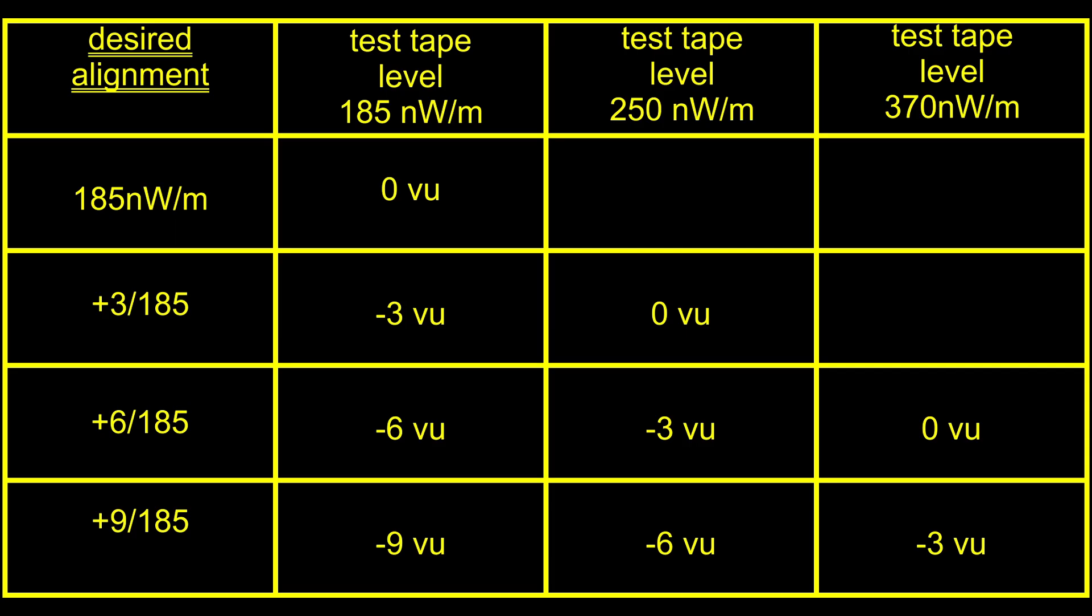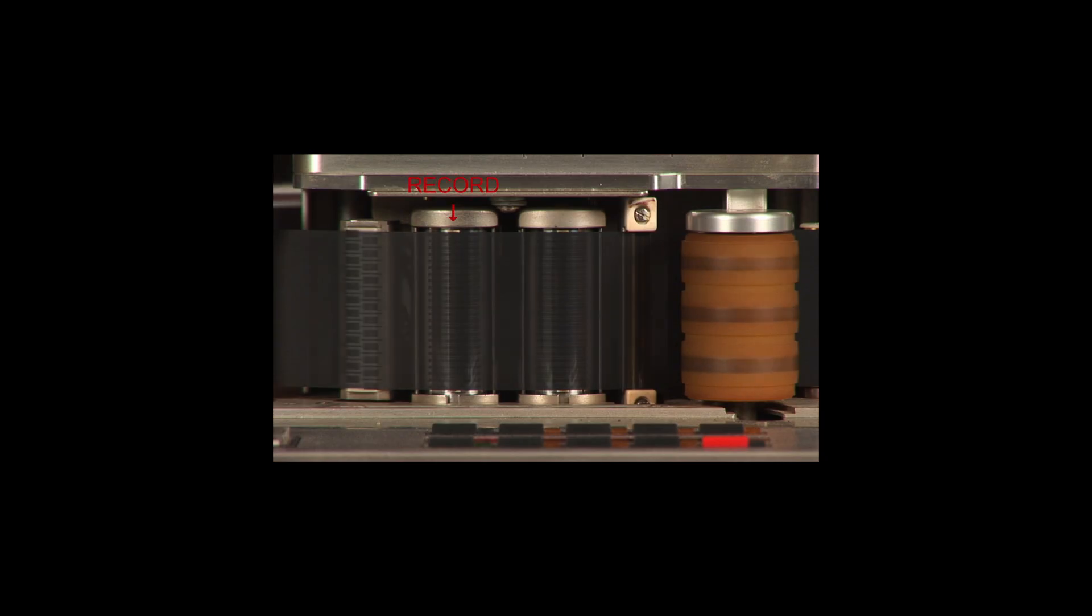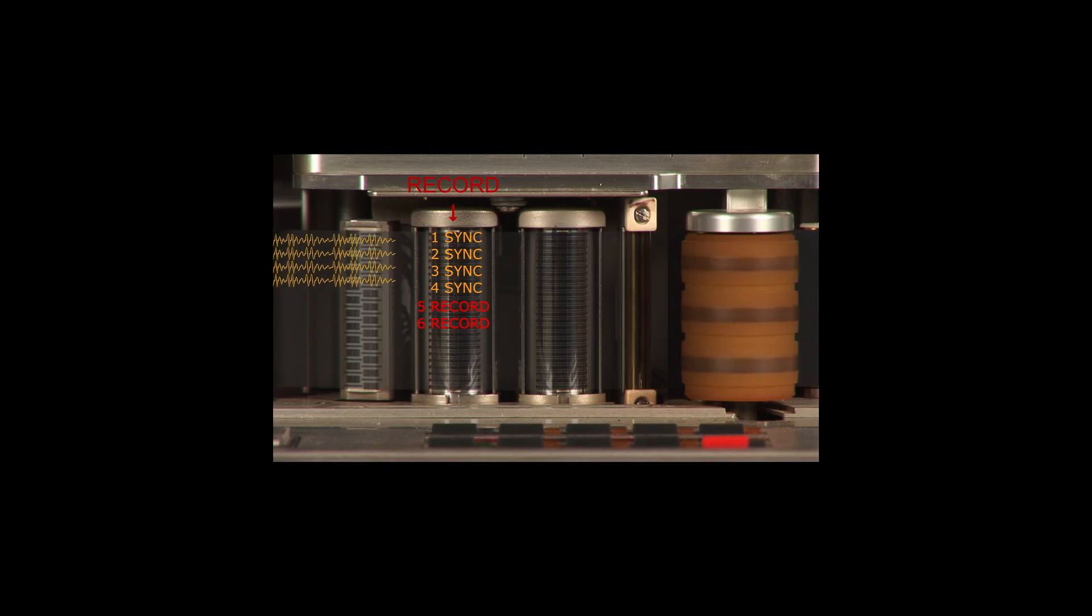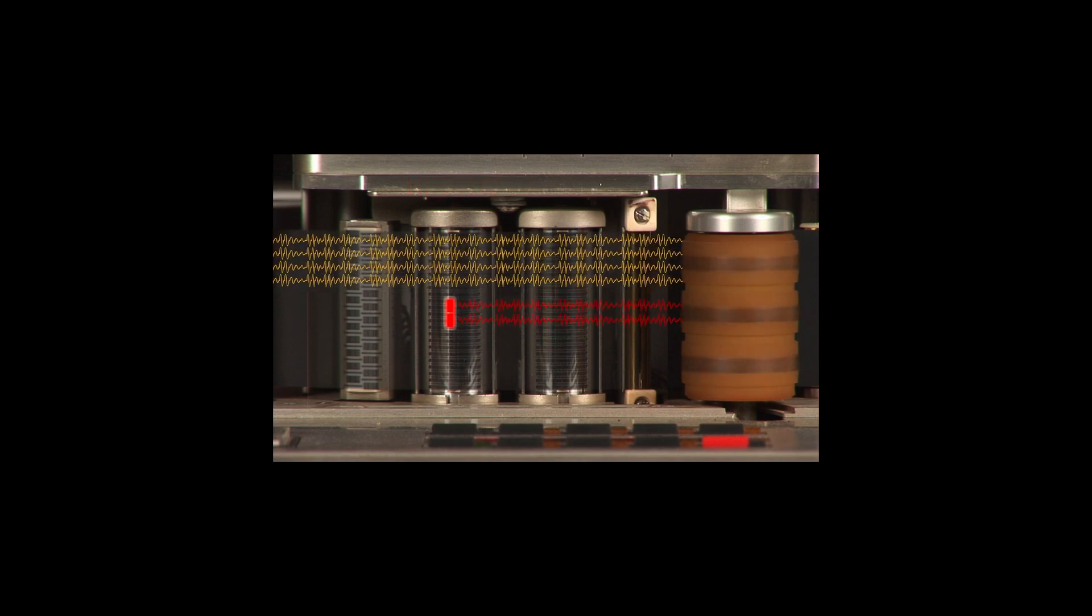This is the end of Part 2. In the next section, Part 3, I explain how a tape machine works, and I'm going to be using a Studer 24-track to demonstrate. If you liked this video, if you would like to see more pro audio content like this, please hit like and subscribe. I know you guys are tired of hearing this, but it does make a difference.